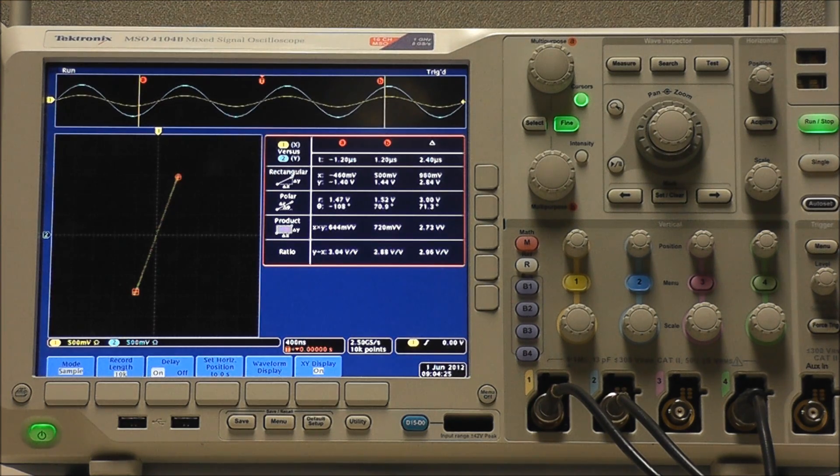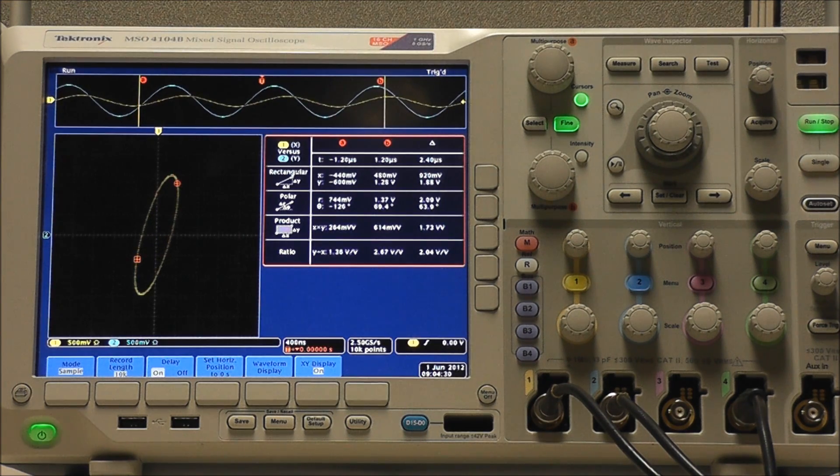And again, if the signals were out of phase, we could tell. At 45 degrees, we see our Lissajous curve. And we would see this again at 135 degrees, 225 degrees, and 315 degrees.